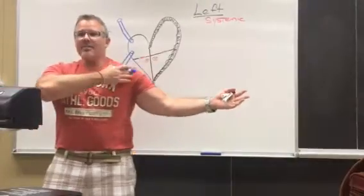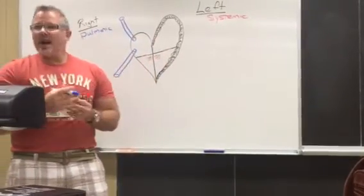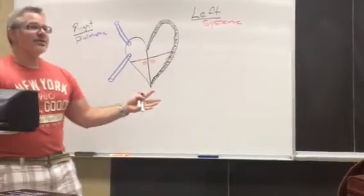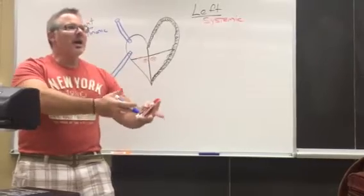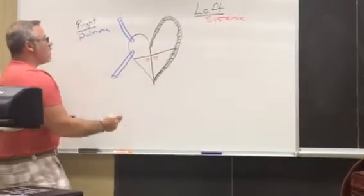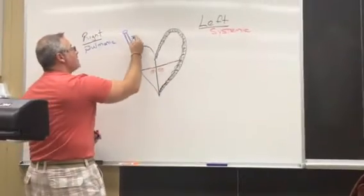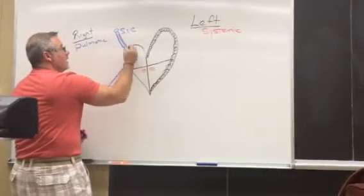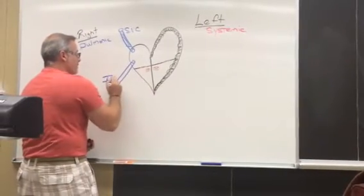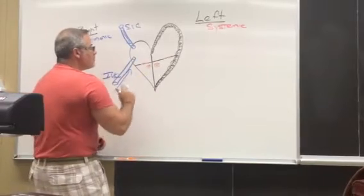Blood that has been pumped to the arms and brain has dumped its oxygen there so that the mitochondria can use it in the Krebs cycle to produce ATP for energy. Once the oxygen has been delivered, that deoxygenated blood must return to the heart to be reoxygenated. Blood coming from the brain and arms returns via the superior vena cava, and blood from the lower extremities and abdominal organs returns through the inferior vena cava into the right atrium.